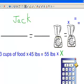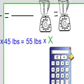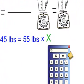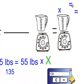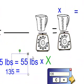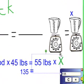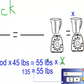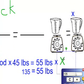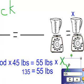What I'm going to do is I'm going to multiply 3 times 45 is equal to 135. Take my 135. That's going to be equal to 55 times my x.